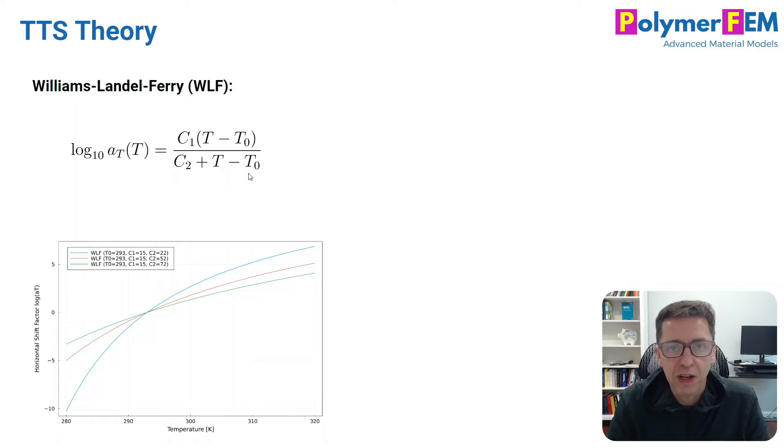Typically, the recommendation is to find these from experimental data. If you plot the curve as a function of temperature here, so the shift factor versus temperature, you see that it's not a linear response, and it tends to be more rapid at the lower temperature than the higher temperature. That's how the WLF equation looks.